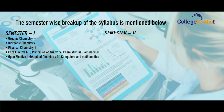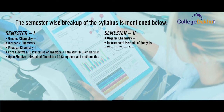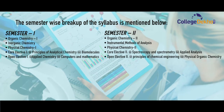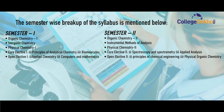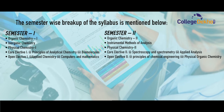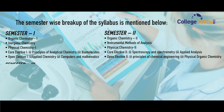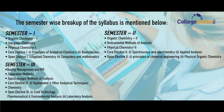In the second semester, they will be studying Organic Chemistry Part 2, Instrumental Methods of Analysis, Physical Chemistry Part 2 again, along with their core elective subject and open elective subject. In the third semester, they will be covering Quality Management and IPR, Separation Methods, Spectroscopy Methods of Analysis along with core elective and open elective subjects.